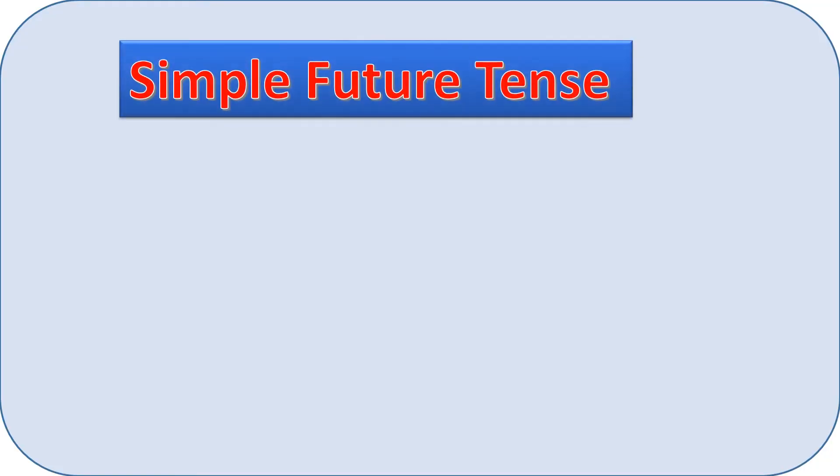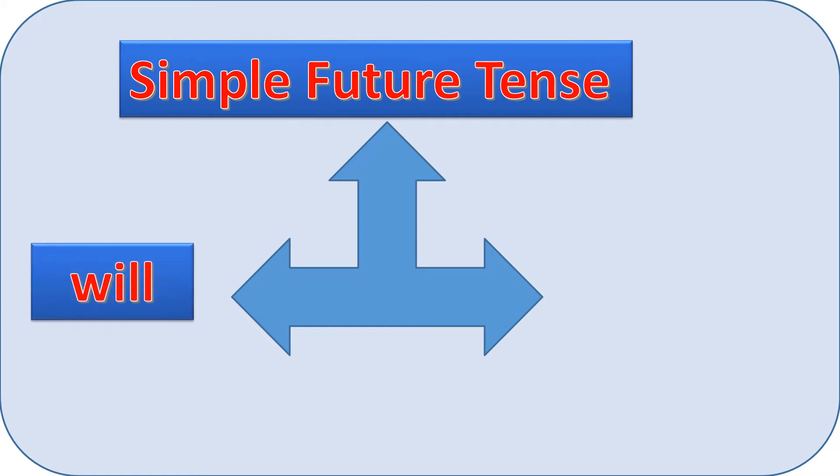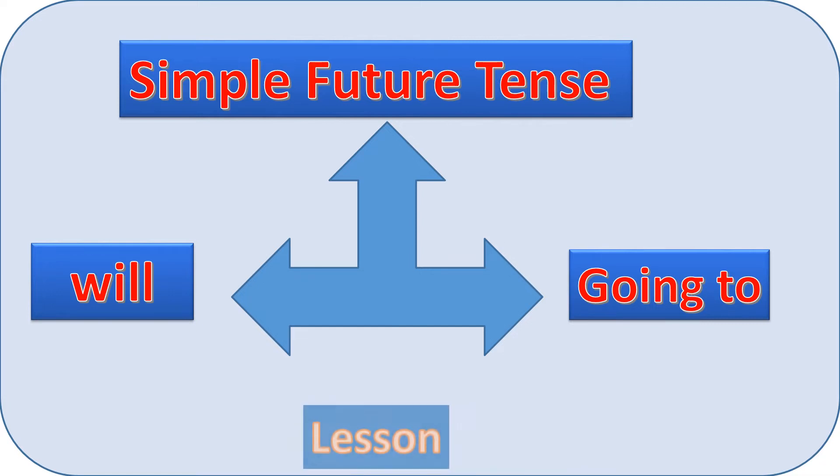Today we are going to study the simple future tense. The simple future has two different forms in English: will and going to. Although the two forms can sometimes be used interchangeably, they often express different meanings. So what's the difference between will and going to in form and use? When do we use will and when do we use going to? This is our today's lesson.